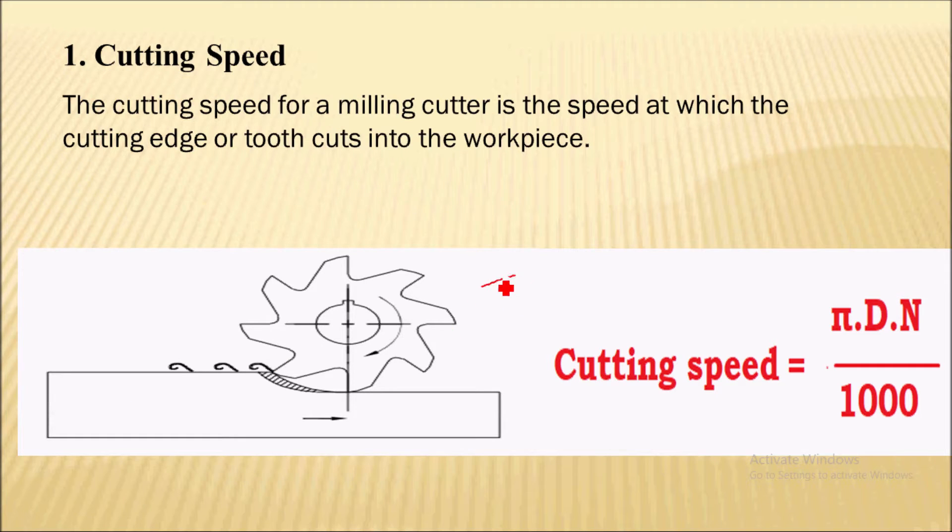Here you can see an image for milling machine operation. This is the milling cutter which has multiple cutting edges over it. It is mounted upon the spindle or arbor of the milling machine.